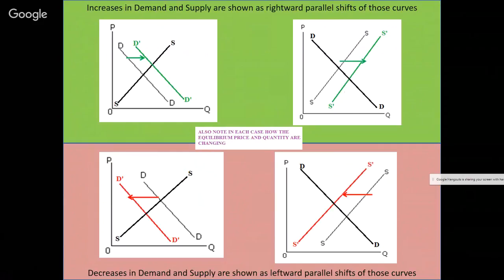It could be the cost of a resource used to make the product, or how many businesses are producing and selling the product. In the case of consumers, it could be the price of a different product related to consumption, or consumer tastes and preferences. We have two laundry lists of shifters, more properly called non-price determinants for demand and supply — these are the factors that make these curves shift left or right. Most textbooks have the list I have, with the exception of one item.